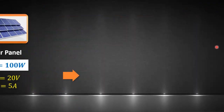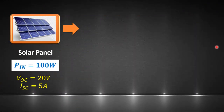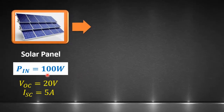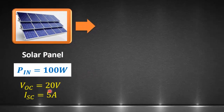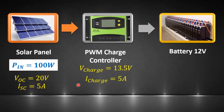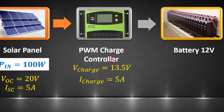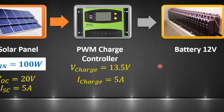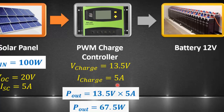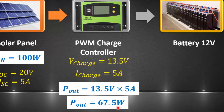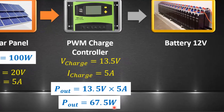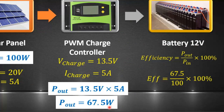Let us see an example to understand the difference between PWM and MPPT solar charge controllers. We have a 100-watt panel whose open circuit voltage is 20 volts and short circuit current is 5 amperes. The PWM charge controller is used to charge a 12-volt battery. In this case, PWM will charge the battery with 13.5 volts and 5 amperes. The maximum output power is 67.5 watts, meaning the extra 32.5 watts from the panel is wasted.